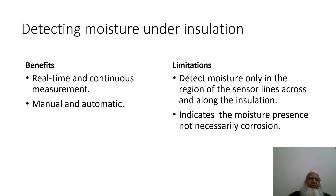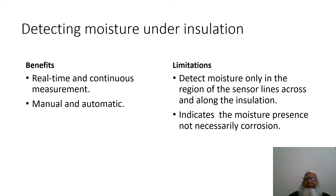Benefits of detecting moisture under insulation: real-time and continuous measurement, available in manual and automatic modes. Limitations: detects moisture only in the region of the sensor lines across and along the insulation; indicates moisture presence but not necessarily active corrosion.